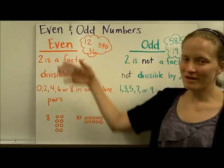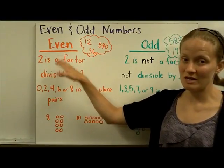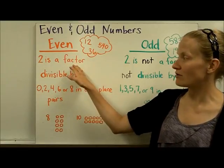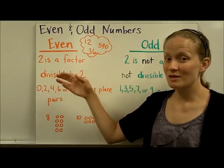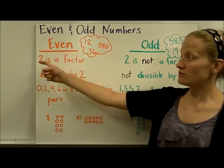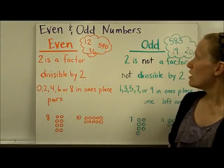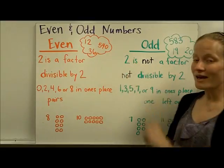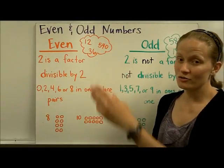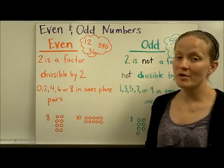The most common definition is that 2 is a factor of an even number. So an even number is any number where 2 is a factor. Remember that a factor is a number that you can multiply by something else to get a product. So 2 times something is going to give you an even number. On the other hand, 2 is not a factor of an odd number, so you're never going to do 2 times something to get an odd number as a product.